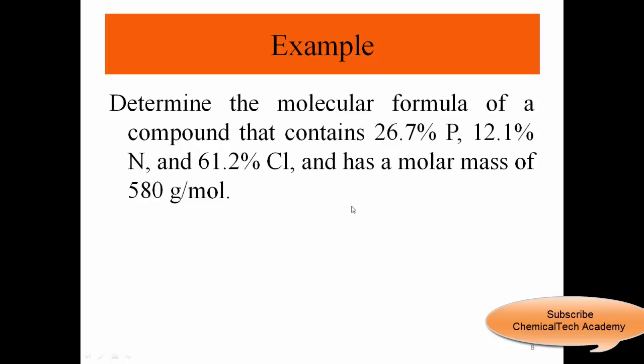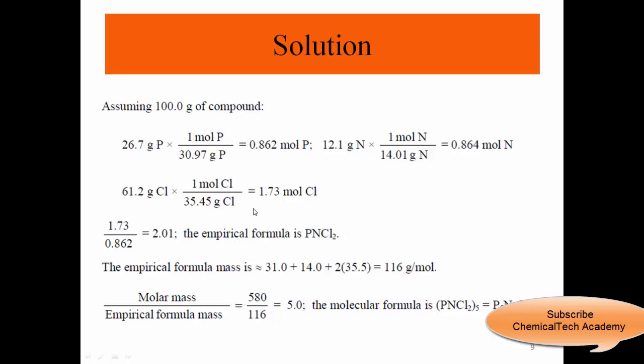We calculate the number of moles and also for chlorine. If you divide chlorine by this number, we get 2 chlorine, 1 phosphorus, and 1 nitrogen. So the empirical formula will be PNCl2.